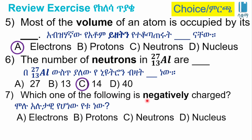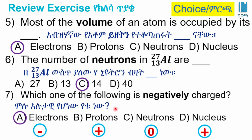This negatively charged particle — A: electrons. B: protons. C: neutrons. D: nucleus. The answer is electrons. If the proton is positively charged, the neutron has no charge, and the nucleus is positively charged, then the negatively charged particle is the electron.